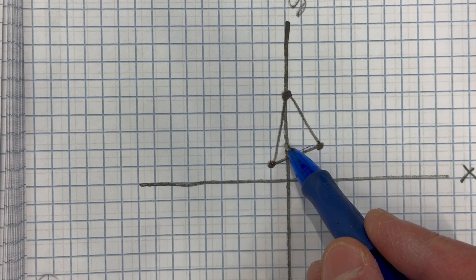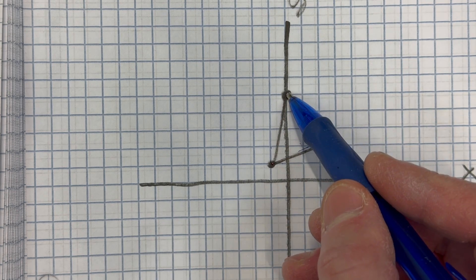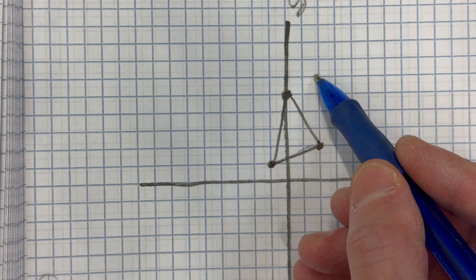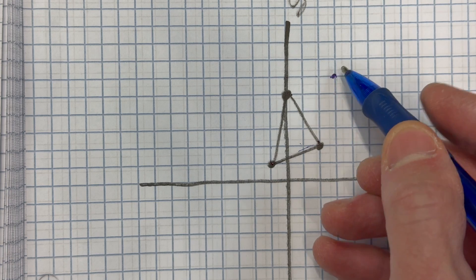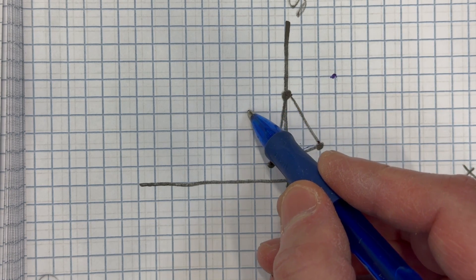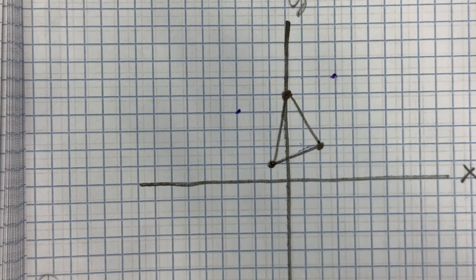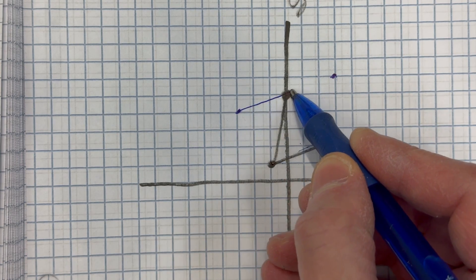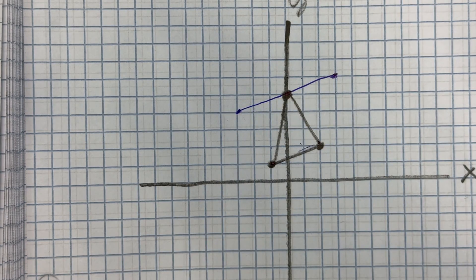I'm going to say rise one, run three. So if I repeat that pattern, rise one, run three, and I put a point here, and I can do the same thing down one, and left three. That's also the same slope of one-third. And if I connect those, that's the side of our triangle.